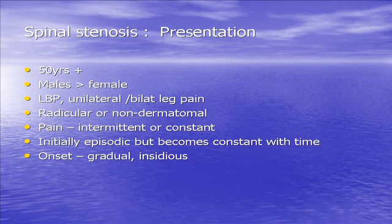Who presents with spinal stenosis? They tend to be the older person, males slightly more than females. Lower back pain — can have unilateral or bilateral leg pain, which could be radicular or non-dermatomal. The pain can be intermittent or constant. It tends to become more constant over time as it becomes more established — I don't really like the word chronic, so let's say established. It usually starts episodic and then becomes constant over time, with a gradual insidious onset. There's very rarely one thing they can pinpoint as the cause.